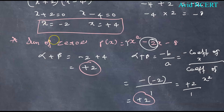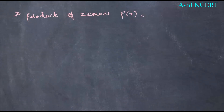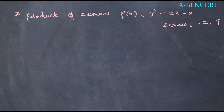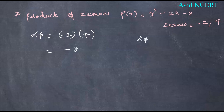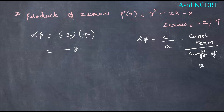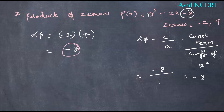Third step — product of zeros: for p(x) = x squared minus 2x minus 8, with zeros minus 2 and plus 4, alpha times beta equals minus 2 times plus 4, which equals minus 8. Using the formula, alpha beta equals c by a, the constant term divided by the coefficient of x squared: minus 8 divided by 1, which equals minus 8. Both values are equal, confirming the relation between the zeros and the coefficients.